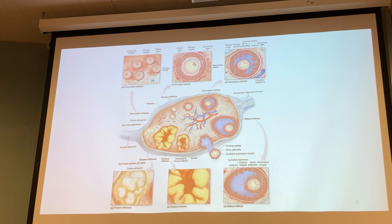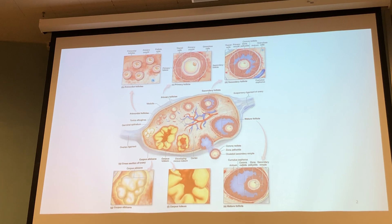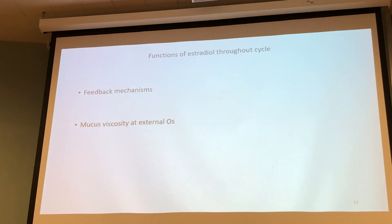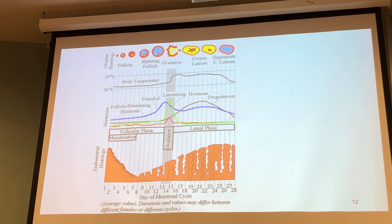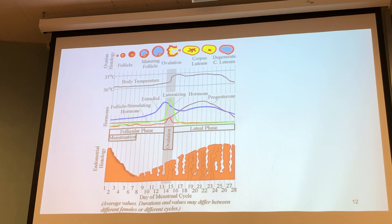We're trying to follow the hormone pathway that drives this. There's a selection process that starts on the first day of menstruation — when menstrual bleeding begins, that's day one of the ovarian cycle. It relates to the uterine cycle. On slide 12 we're looking at two things simultaneously: the ovarian cycle up top and the uterine cycle below. We can divide both the uterine and ovarian cycles into two phases.